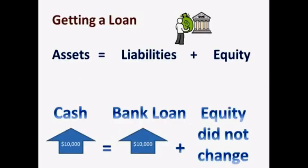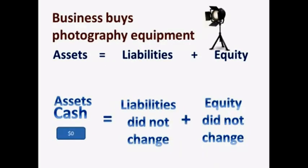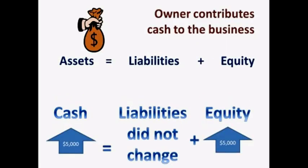In the first video, we saw how the accounting equation changed when a business gets a bank loan. We also saw how the equation is affected when a business purchases equipment, and how the equation stays in balance when an owner contributes cash, because both cash and equity increased. This video will focus on how revenues and expenses affect equity, and we're going to show how this shows up on the accounting equation.